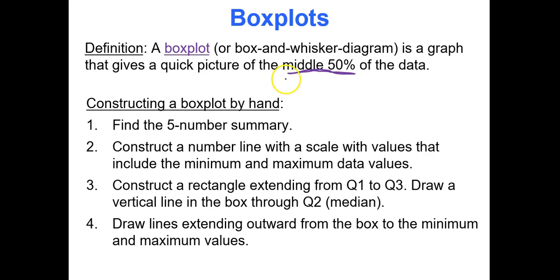To construct a box plot by hand, you need the five number summary. Then make a number line, construct a rectangle extending from Q1 to Q3, draw a vertical line through the median or Q2, and then draw whiskers going out to the minimum and maximum values.